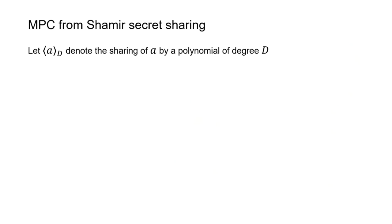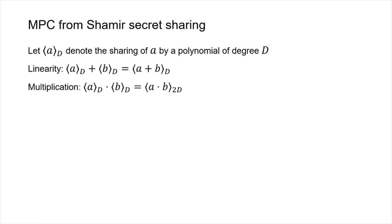With Shamir secret sharing we can do general MPC. We use this notation to denote a sharing of value a with a polynomial of a particular degree. Some properties of Shamir secret sharing: if you add together shares you get a share of the sum, and if you locally multiply shares you get a share of the product.